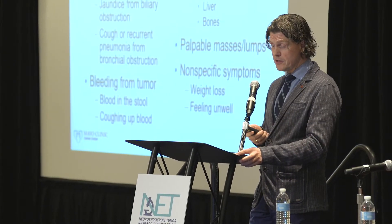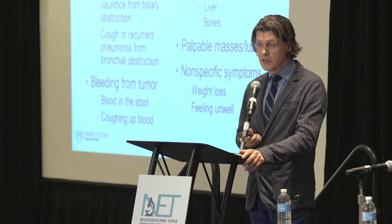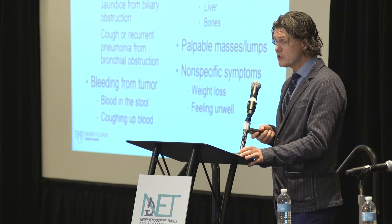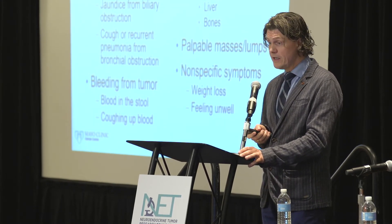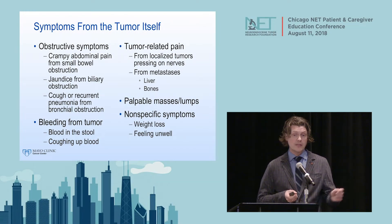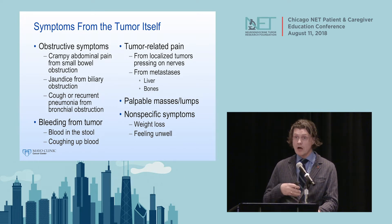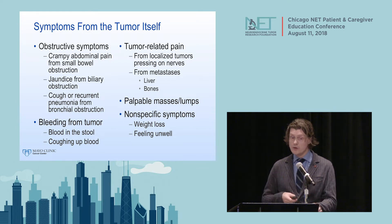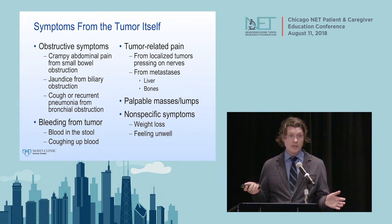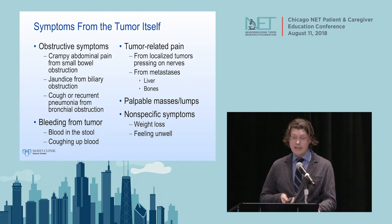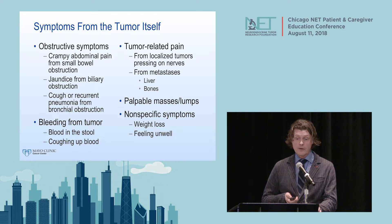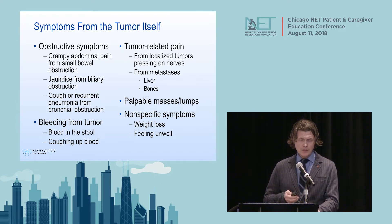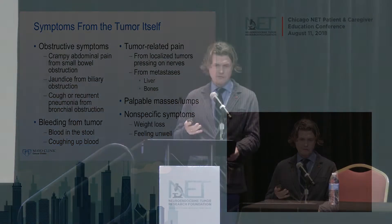The symptoms of NETs are a tough topic because they can present in such a variety of ways. I split them into symptoms caused by the tumor itself and symptoms caused by substances the tumor makes. Symptoms from the tumor itself include obstructive symptoms—crampy abdominal pain from a bowel blockage, jaundice from a blocked bile duct, cough or recurrent pneumonia from a blocked bronchial tube. Tumors can also bleed, causing coughed-up blood or blood in stools. They can cause pain from liver or bone metastases, a palpable lump, or non-specific symptoms like weight loss and not feeling well.